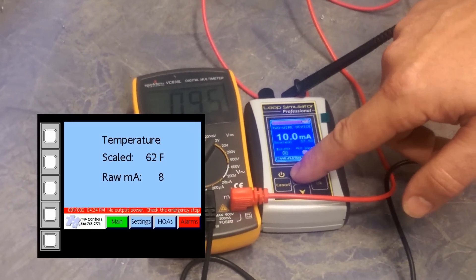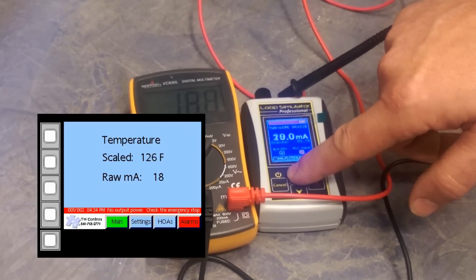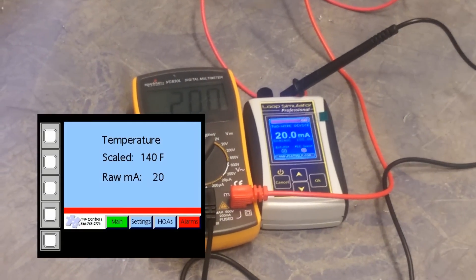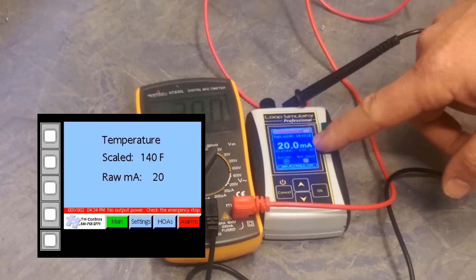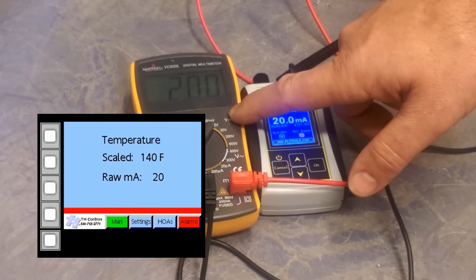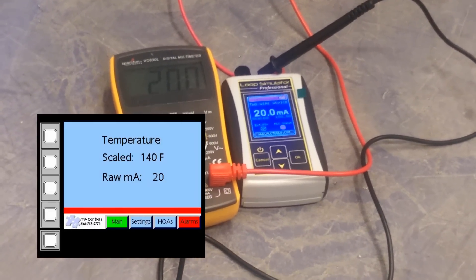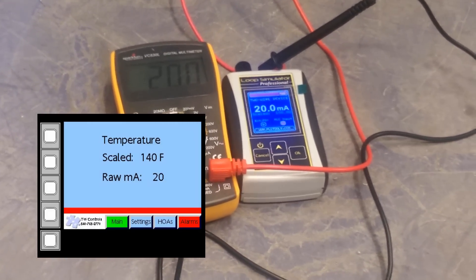And I'm not going to go through each one of them. As you can see, as we bump it up, it bumps up on our meter until we get to 20 milliamps. Now our simulator shows that we're putting out 20 milliamp. Our meter shows we're putting out 20 milliamp. Our HMI shows 20 milliamp. And our scale value shows 140 degrees Fahrenheit.